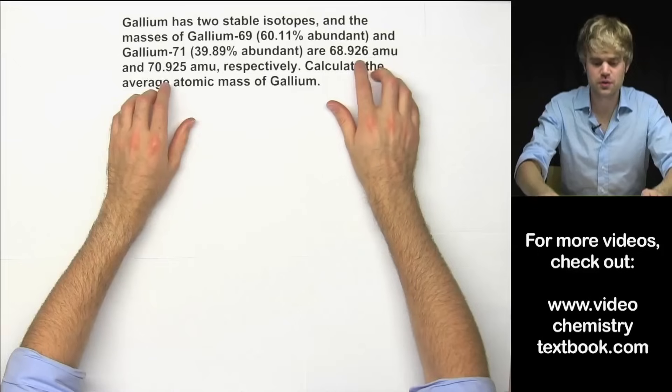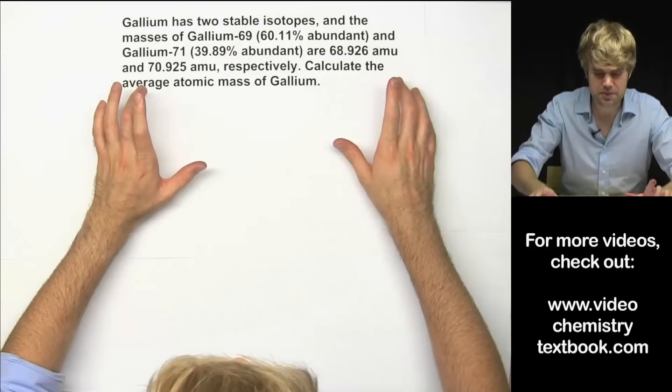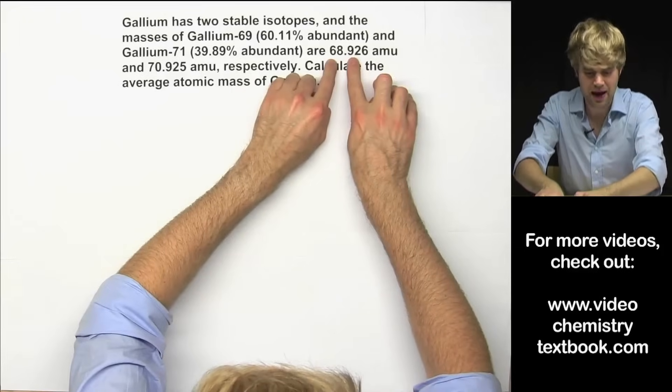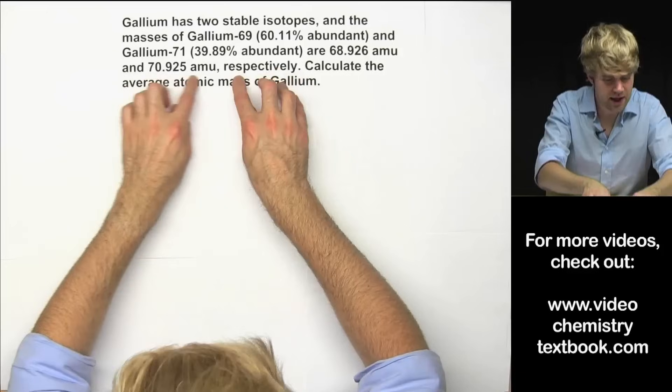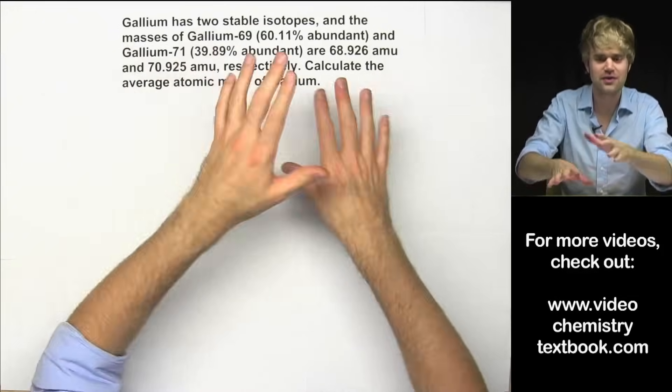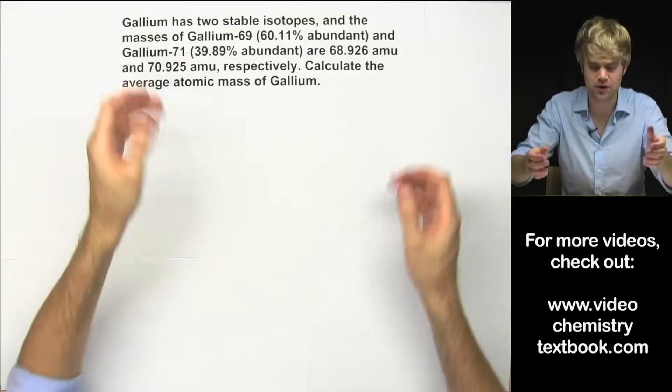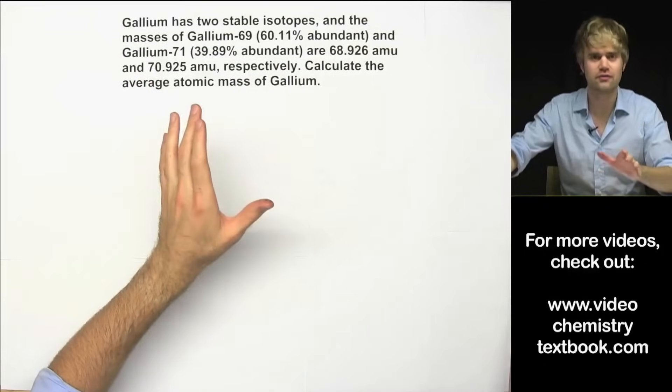You know what respectively means? It means that we've got two masses here and two atoms here. So respectively means the first of these masses goes with the first atom mentioned and then the second one of these masses goes with the second atom mentioned, so don't let that term throw you off. Anyway, calculate the average atomic mass of gallium.